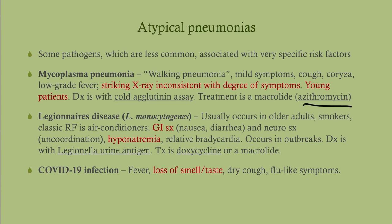Legionnaires' disease: expect older adults with pulmonary symptoms plus GI symptoms like nausea and diarrhea, and possible neurological symptoms. Hyponatremia is another key finding — check electrolytes for a big hint. These tend to occur in outbreaks and it's a reportable disease — on CCS, report it to the State Department of Health. Diagnosis is with a Legionella urine antigen. Best initial step is the chest x-ray, but diagnosis requires the urine antigen. Treatment is doxycycline or a macrolide.